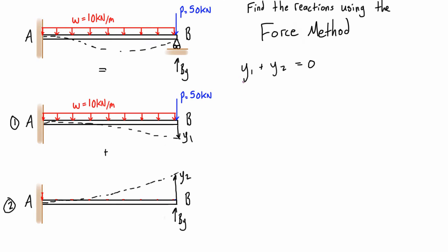So y1 equals −wL⁴ / (8EI) minus PL³ / (3EI). That's the superposition of the distributed load term and the point load term acting at the end of the cantilever beam. Now for y2, it is also a point load at the end of a cantilever beam, but acting upward, so it's the same form with a positive sign: +PL³ / (3EI), where this P is actually the unknown force BY.